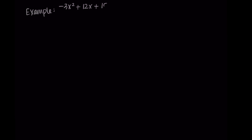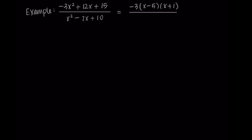Let's try this again on another example: negative 3x squared plus 12x plus 15, divided by x squared minus 7x plus 10. To work this problem, it's much easier to use the factored form. The numerator factors as negative 3 times x minus 5 times x plus 1, and the denominator factors as x minus 5 times x minus 2. We'll use this factored version to answer our questions.